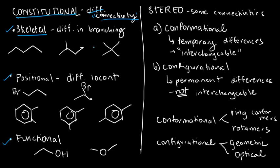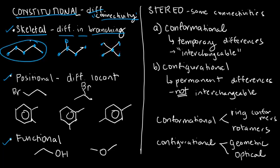Skeletal isomers are two or more compounds with the same molecular formula, but the difference in their structure is particularly in branching. Observe that all three structures here have five carbons each. But the first is linear — it doesn't have a branch. The second has one branch. The third has two branches. The moment they differ in branching — like you've disassembled sticks and put one somewhere else — you call those skeletal isomers.